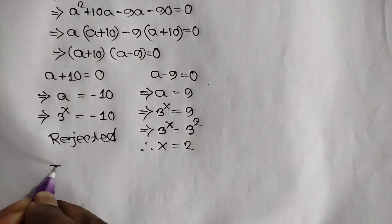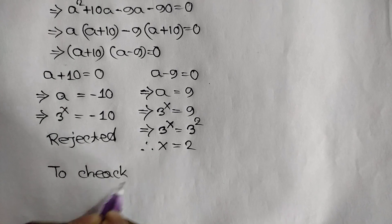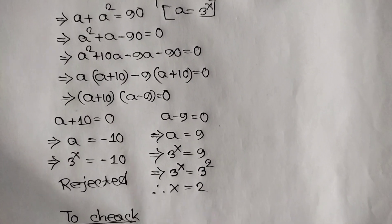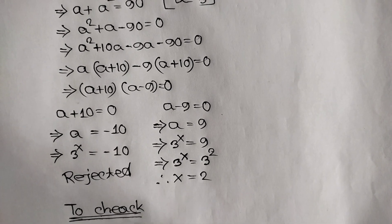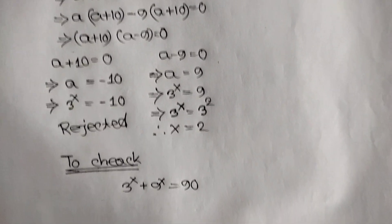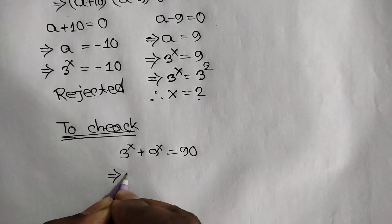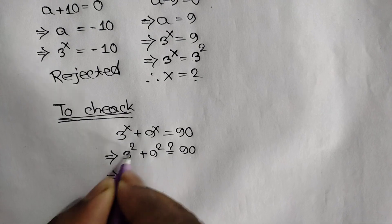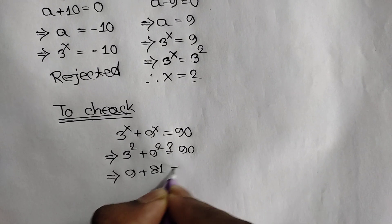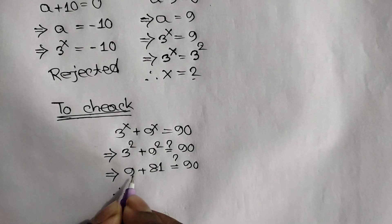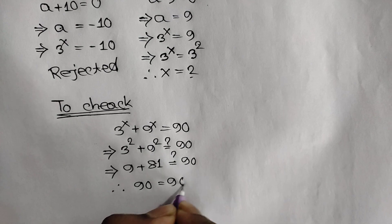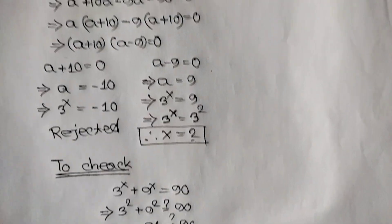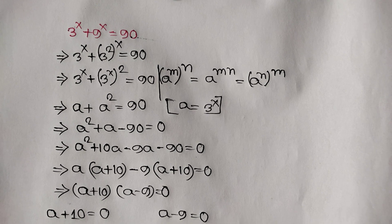Now let's check our equation: 3 to the power x plus 9 to the power x equals 90, with x equal to 2. We get 3 squared plus 9 squared equals 9 plus 81 equals 90. Left hand side equals right hand side, so our answer is correct. The value of x is equal to 2. Thank you for watching — if you like this video please subscribe to my channel. See you in the next video, bye bye.